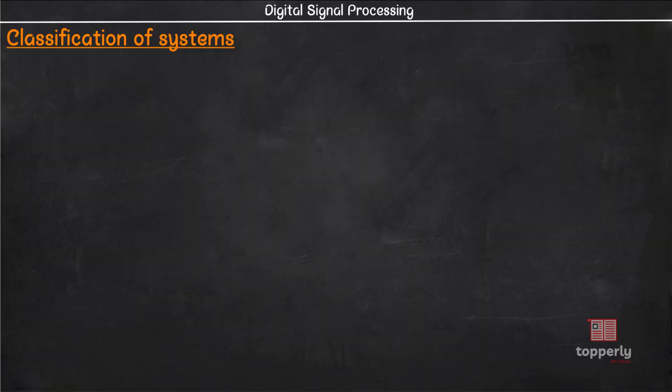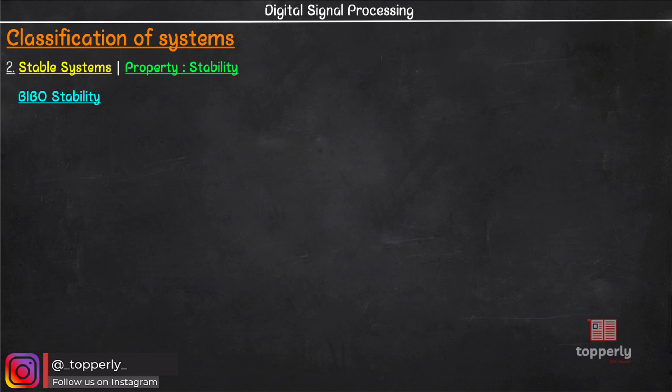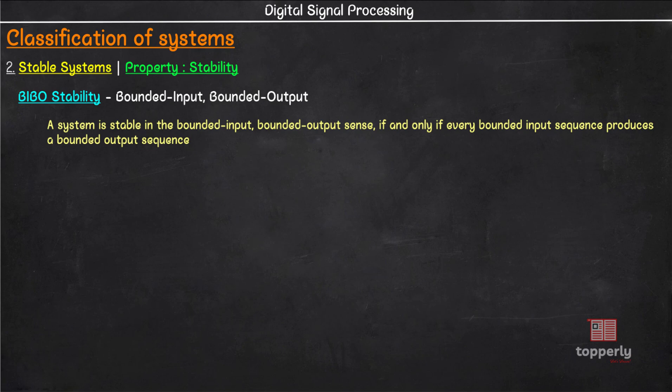There are many definitions for the stability of a system. Of them we will study about a particular type of stability called BIBO stability. Here BIBO stands for bounded input bounded output. As per BIBO stability criteria, a system is stable if and only if it produces bounded output for bounded input at each and every instant of time. As you can see, the most important aspect here is the term bounded and we are bounding the amplitude of the input and output signals.